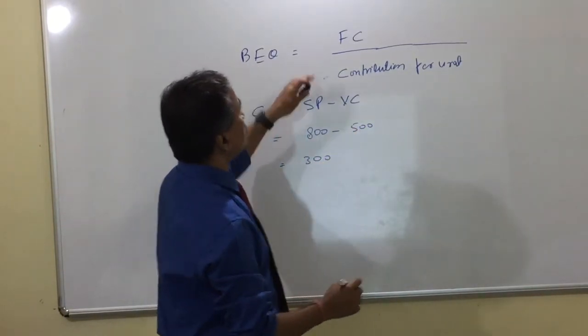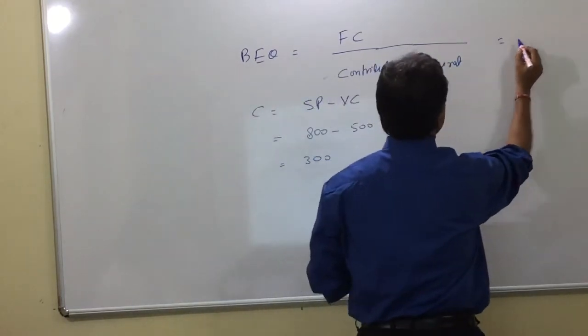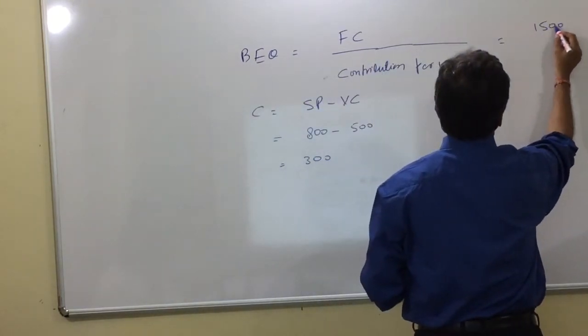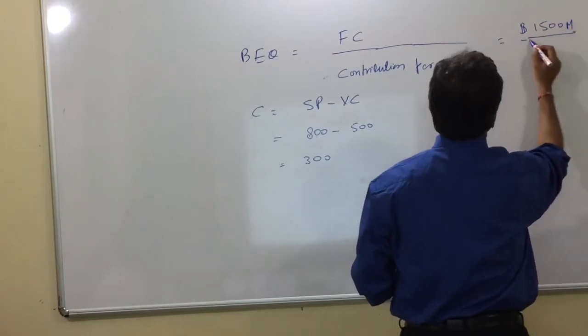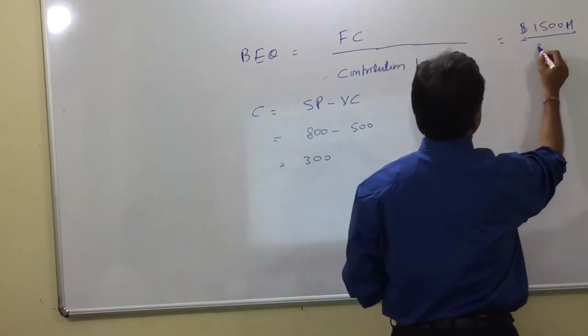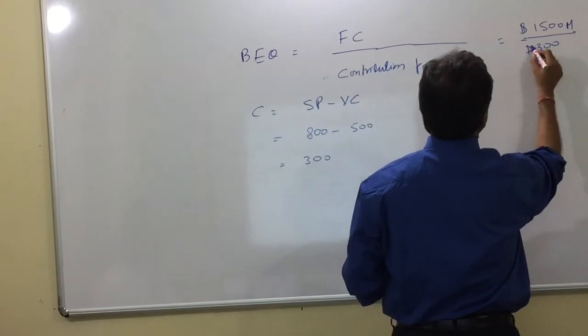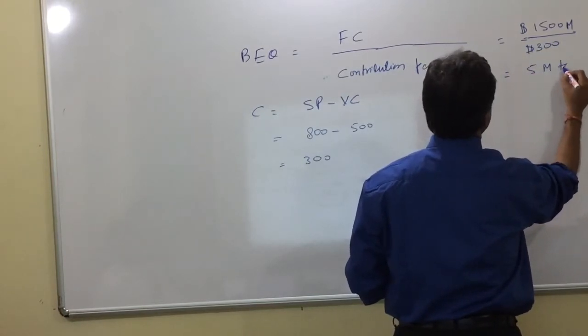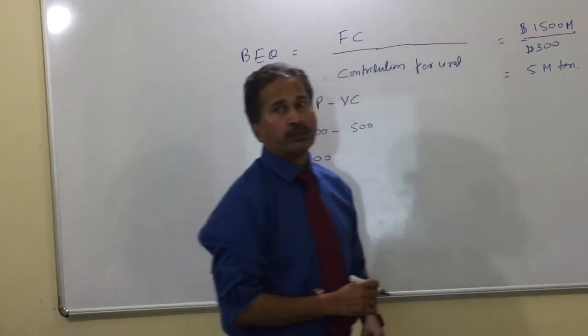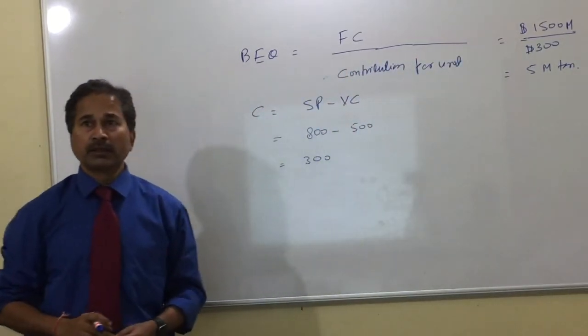So what is my break-even point? My break-even point is 1500 million dollars divided by 300. Which means 5 million ton is my break-even point in absolute balance. So that's what I do.